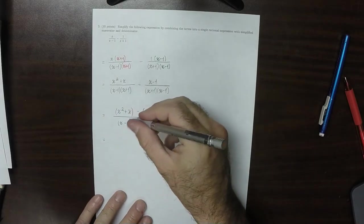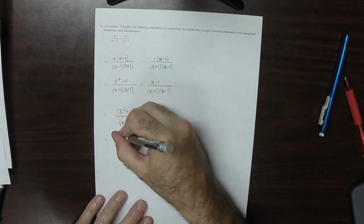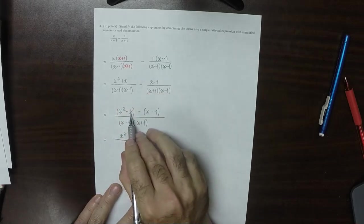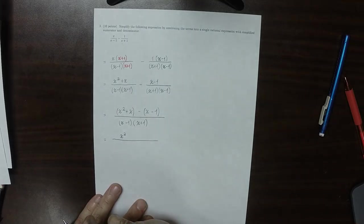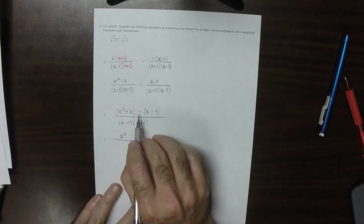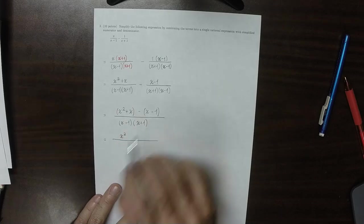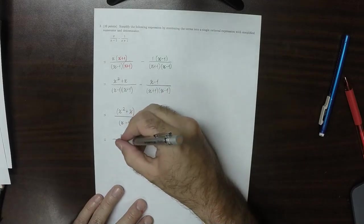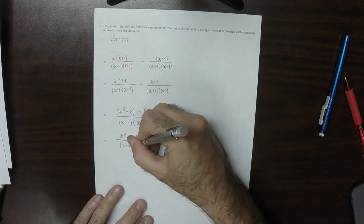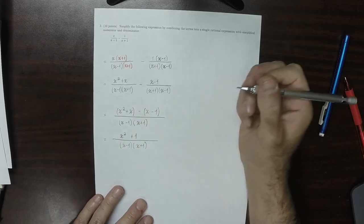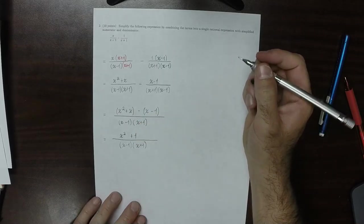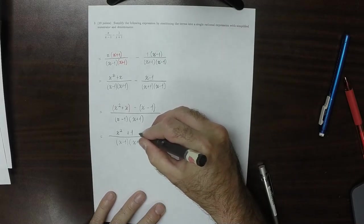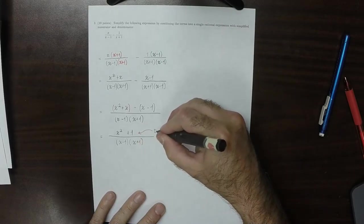So that would be carrying that out. x squared in the numerator. And then we have x minus x so those cancel. And then we have minus negative 1 so that would be plus 1. And this would be x minus 1 over x plus 1. And then x squared plus 1 this does not factor further.